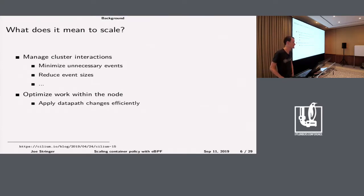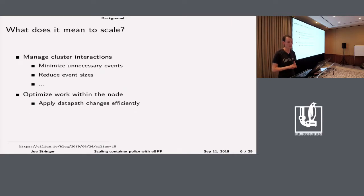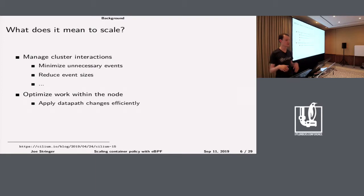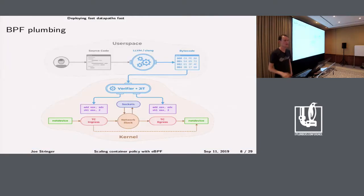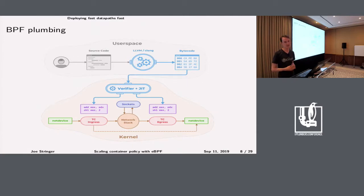There are various different things you can do to scale out. I'm not going to cover the entire magnitude of all the work needed. Some of my colleagues did work on managing cluster interactions — minimizing the number of events between nodes, the sizes of those events, and so on. There's a link to the Cilium blog for more details. What I'm more focused on here is optimizing work within nodes: when we have events like creation of a pod or a policy, how can we map that implementation down into the data path? First up: deploying fast data paths fast. Cilium has been written so that we do the minimal amount of work necessary to apply the networking and policy for a container.